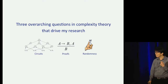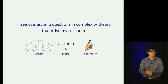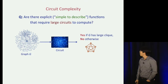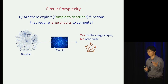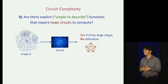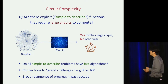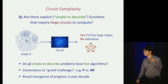The first question comes from circuit complexity. The question here is: are there explicit, simple-to-describe functions that require large circuits to compute? For example, consider the function that takes as input graphs and outputs yes if and only if the graph contains a large clique, say of size at least 100. This is a very simple-to-describe function. Does it have a correspondingly simple circuit that computes it? That's a major open problem in circuit complexity. In circuit complexity, we think of small circuits as fast algorithms, so this question asks if every simple-to-describe problem has a fast algorithm — intimately connected to the P versus NP question.